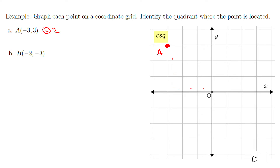Point B is at negative two and three. From the origin, I'm going to go two left and three down. This is point B, which is in quadrant three.